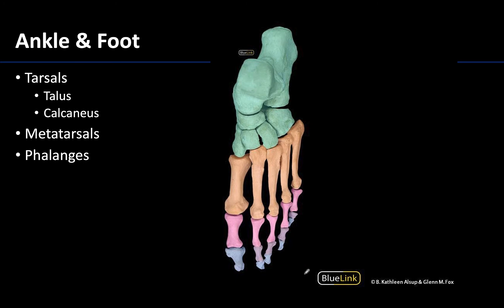In the ankle and foot region, looking at the dorsal view of the foot, there are seven tarsal bones shaded in green — one fewer than the carpals but considerably larger. Two tarsal bones to know are the talus, the most superior tarsal that plays a role in the ankle joint, and just inferior to it the calcaneus, the largest tarsal bone, sometimes called the heel bone, easily identifiable due to its size.